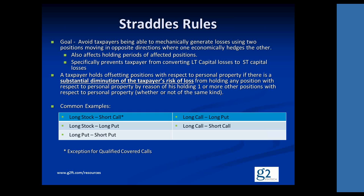Some typical examples of straddles in real-world trading scenarios include: long a stock and short a call, long a stock and long a put, long a put and short a put, and various others. One classic example of something that is not a straddle is a qualified covered call — when the taxpayer is long the stock and short a call option. It's not always true that that combination creates a qualified covered call, which is exempt from the straddle rule, but when a call does qualify as a qualified covered call, you can ignore the straddle rule.